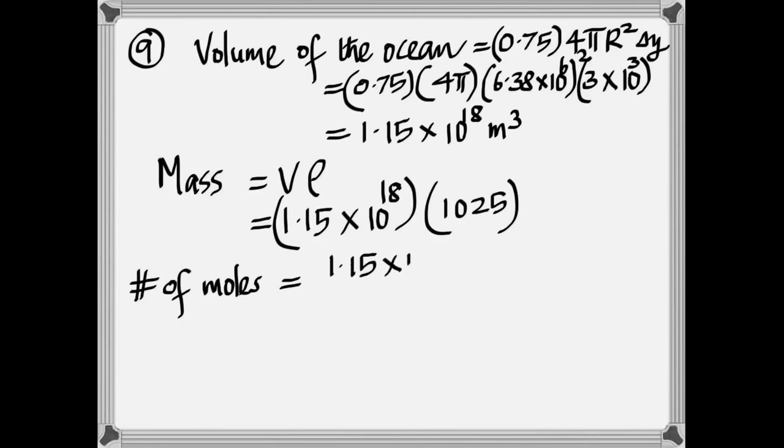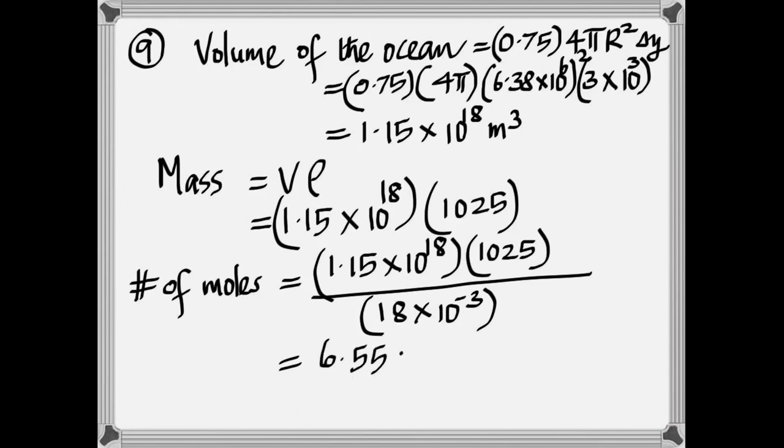And then the number of moles is always total mass divided by the molecular weight in kilograms. And it's H2O, so it's 2 plus 16, 18 grams, which is 18 times 10 to the negative 3 kilograms. We get 6.55 times 10 to the 22 moles.